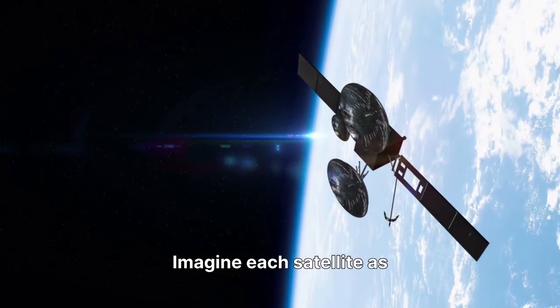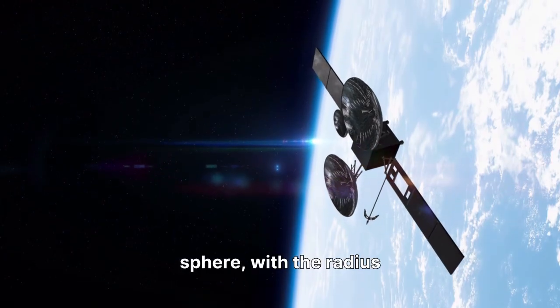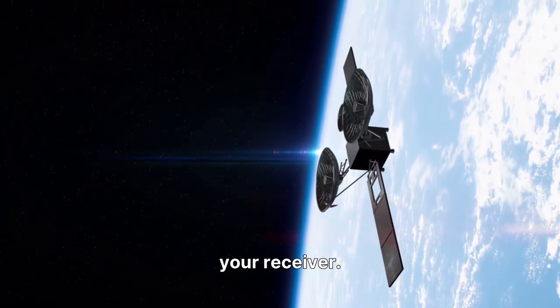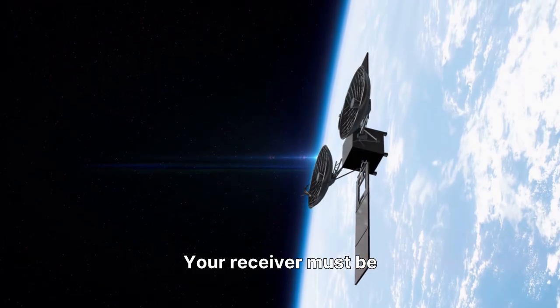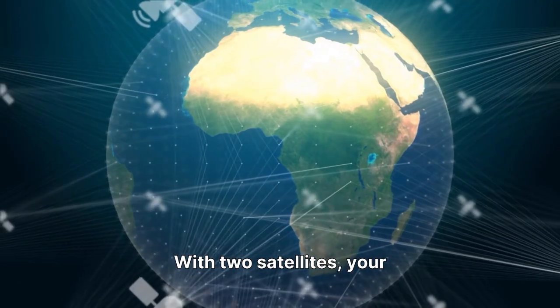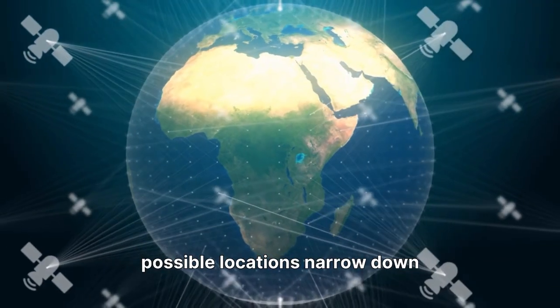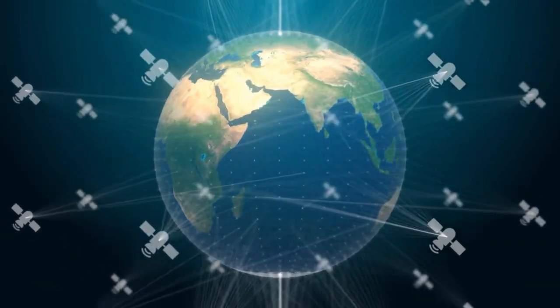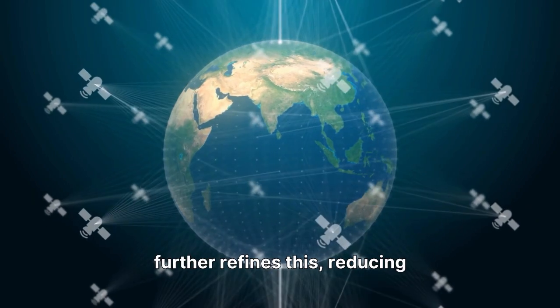Imagine each satellite as the center of a sphere, with the radius of that sphere being the calculated distance to your receiver. Your receiver must be somewhere on the surface of that sphere. With two satellites, your possible locations narrow down to a circle where the two spheres intersect. Adding a third satellite further refines this, reducing your potential position to just two points.